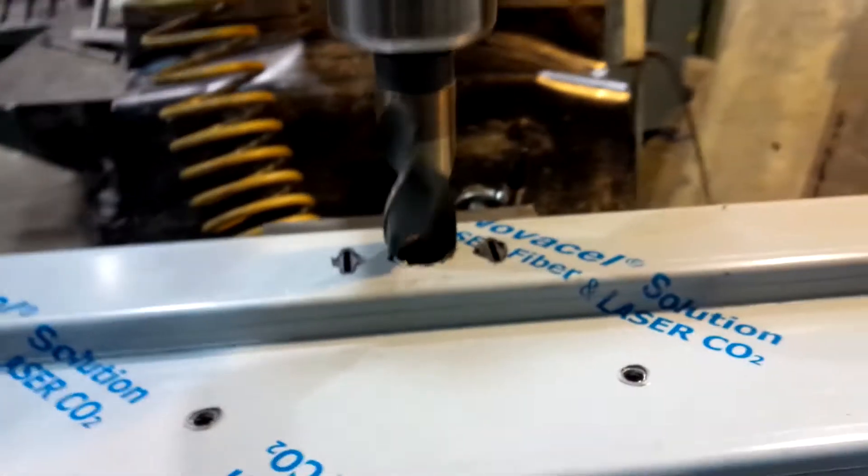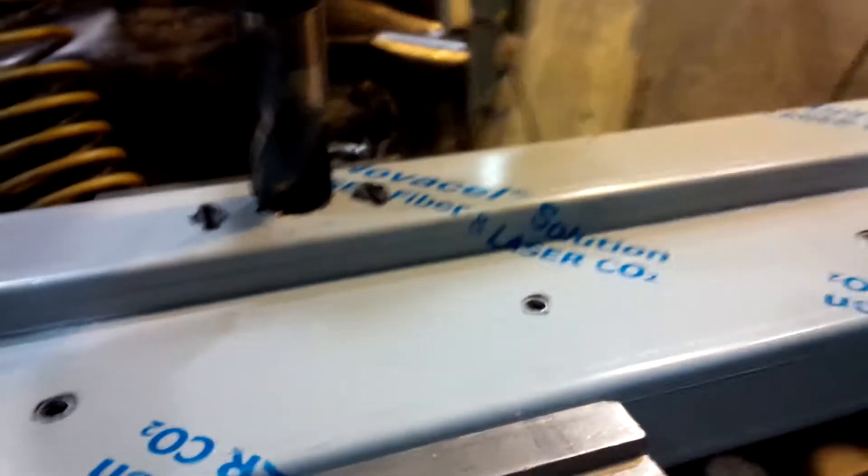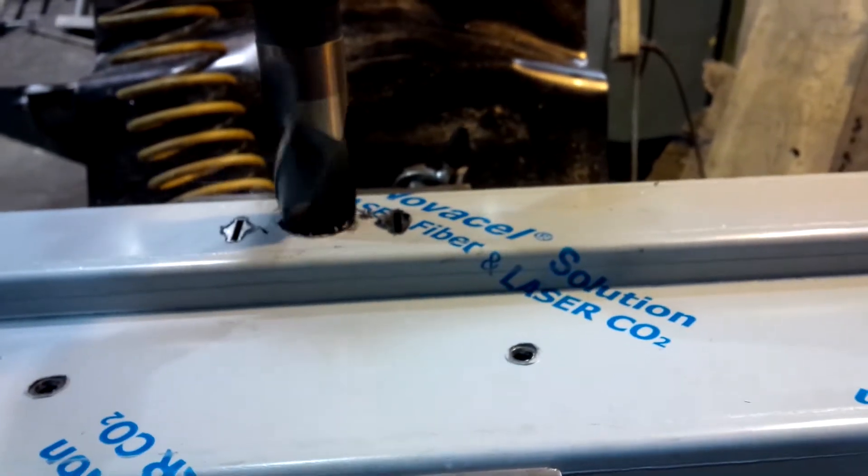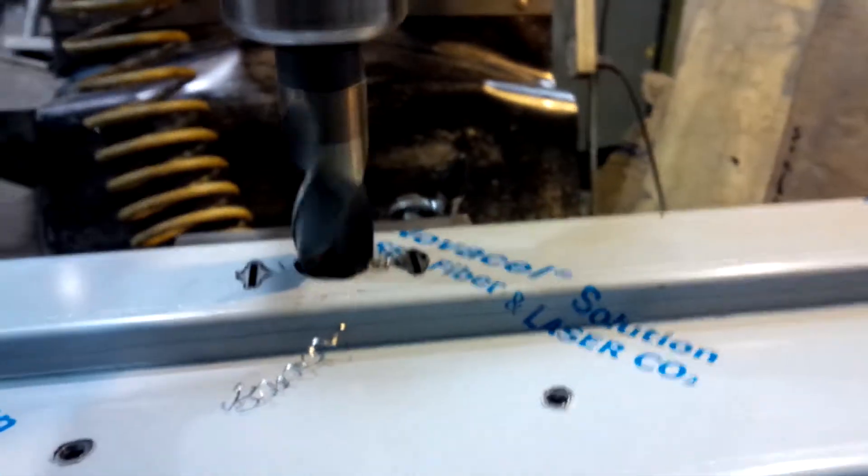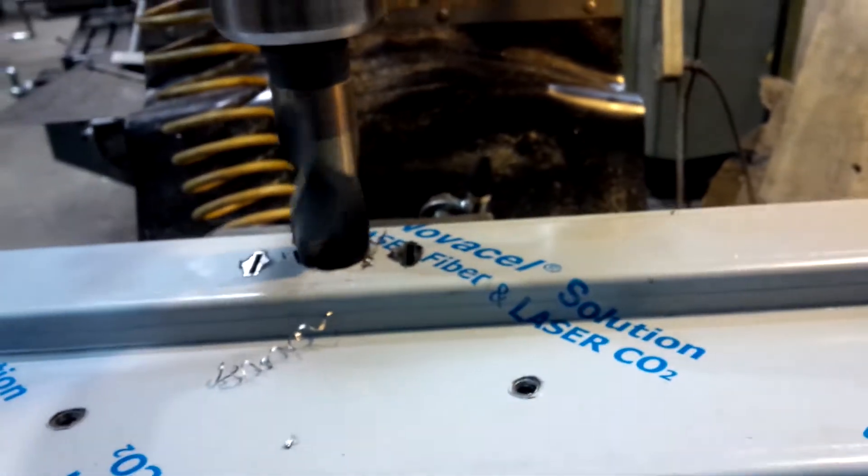So on thin sheet metal what we're going to do here is lock the quill and come up with the bottom. When we bring the table up we have a little bit more control than bringing the quill down.